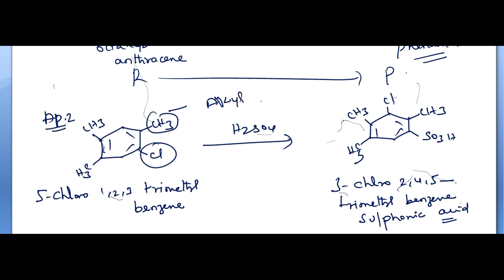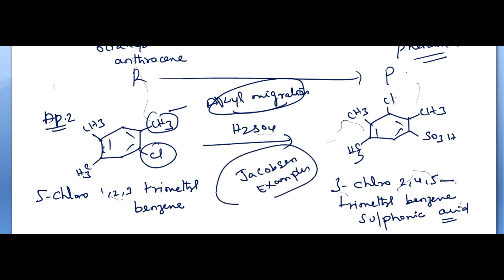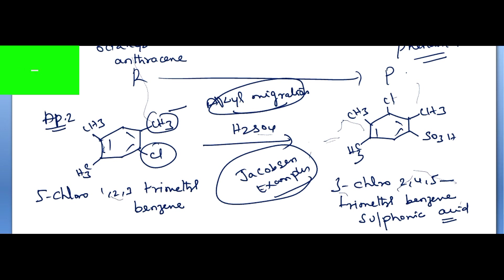Alkyl migrated. The second example is a Jacobson rearrangement example. This is all the same — alkyl group migration. If you have doubts, share your comments in the comments section and we will answer you. The email ID is in the description box.